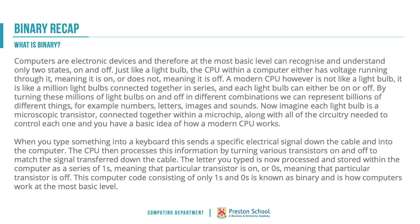A modern CPU is not really like a single light bulb — it's like a million or billion light switches connected together in series. Each one of those can be on or off. If we spend hours creating a computer program, we obviously want to be able to store that at the end. Programming is me going and switching on and off the relevant light bulbs. Clicking File Save As saves that state — saves that program into memory. When you type a word or letter into the keyboard, you're sending a series of ones and zeros down that cable or wireless connection into the computer, where they are processed by the CPU and stored.